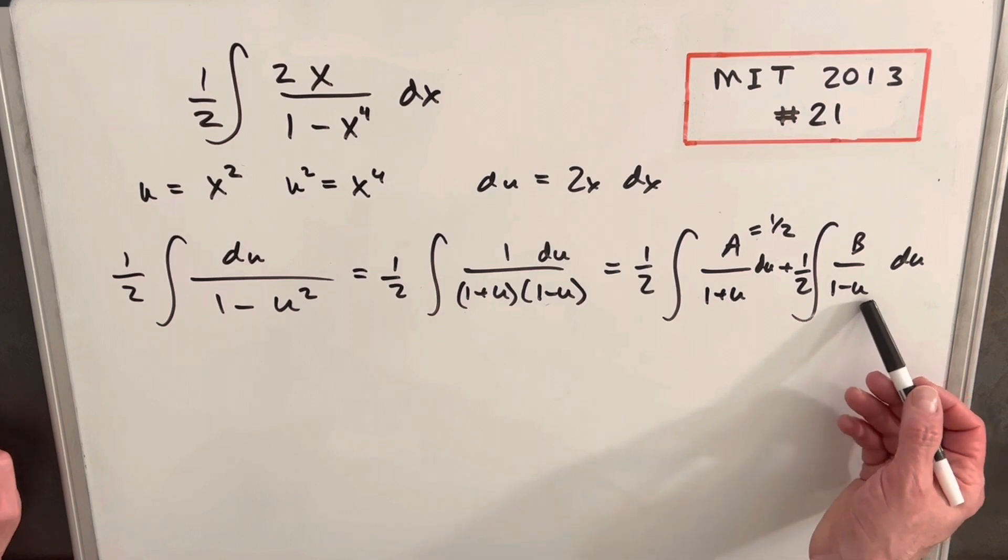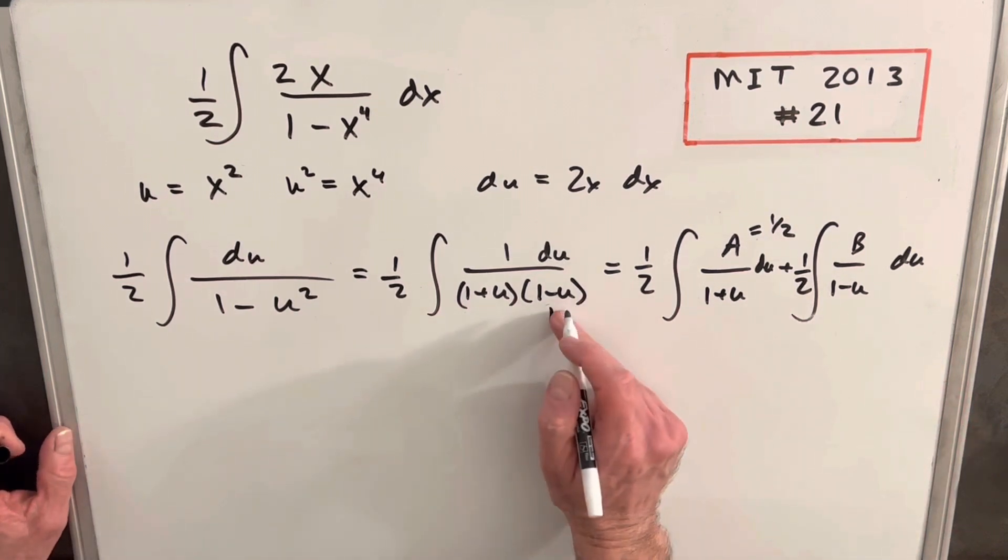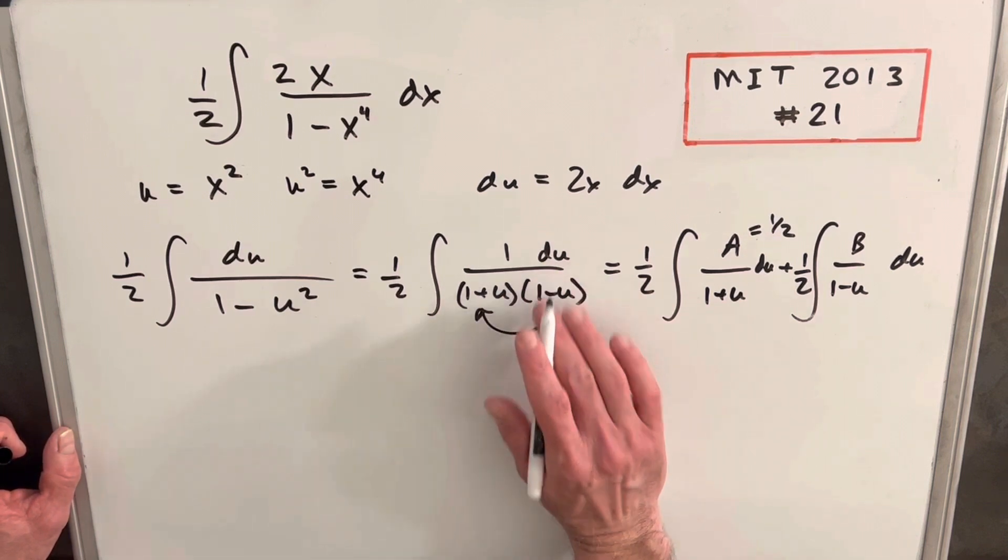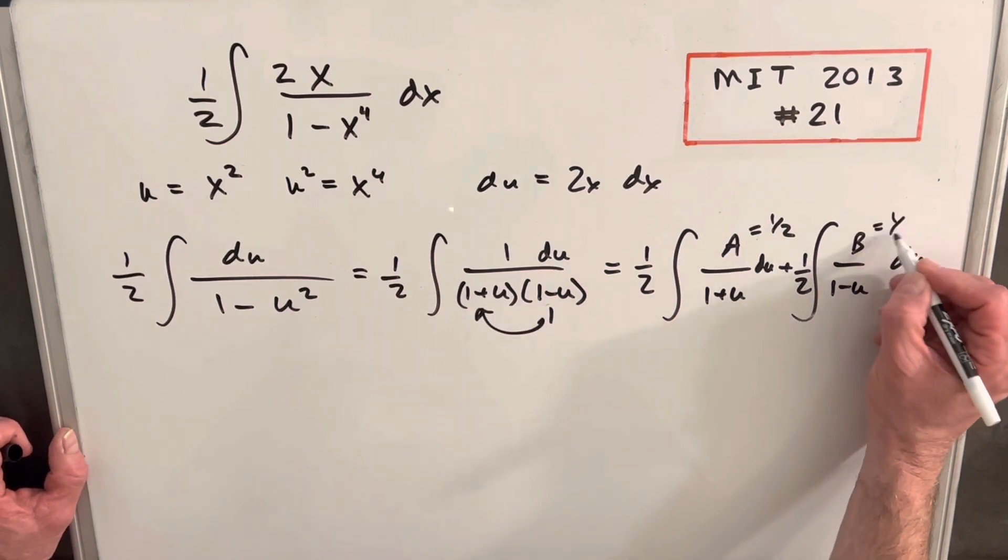And then for this B term, we'll do the same thing, but we'll focus on this 1 minus u. So we can take a 1, which will make that 0, cover it up, plug the 1 in over here. 1 plus 1 is 2. 1 over 2. This is also going to be one half.